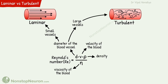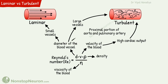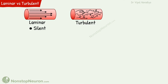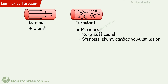In large arteries, some turbulence occurs at the branches. High cardiac output increases blood velocity which tends to cause turbulence. In the proximal portion of the aorta and pulmonary artery, large vessel diameter as well as high blood velocity both contribute to turbulence. In pathological conditions like arterial stenosis, turbulence occurs due to a local increase in velocity. Laminar flow is silent, whereas turbulent flow can be auscultated as murmurs. For example, Korotkoff sounds during measuring blood pressure, and murmurs in vessel stenosis, shunts, and cardiac valvular lesions are produced by turbulent blood flow. Very intense turbulence can even be felt by touch as thrills.